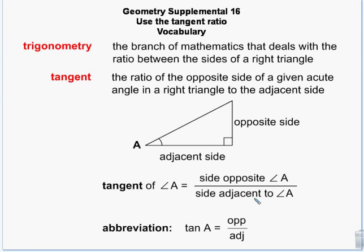We're going to start with tangent. The tangent is a ratio — remember, a ratio is basically a fraction — so we're talking about fractions here, and we usually convert them to decimals. In trig we deal with decimals more than fractions. The tangent is the ratio of the opposite side of a given angle to the adjacent side.